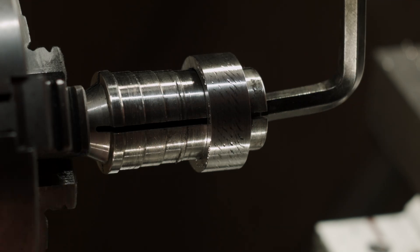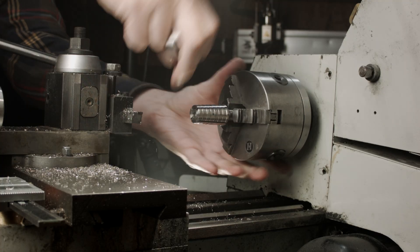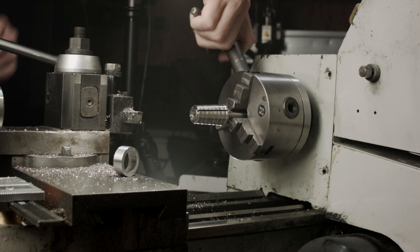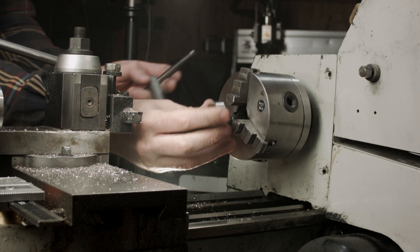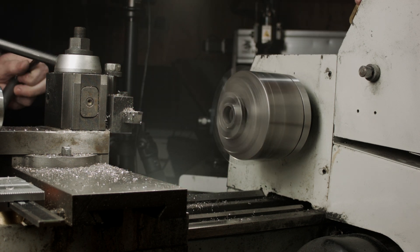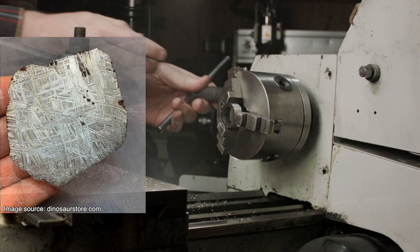The nickel to iron ratio along with the cooling time is what determines the size of these crystals. Which makes it possible for even an untrained eye to see the difference between different meteorites. The meteorites I use are the Muonionalusta, which has a pretty fine pattern, which is fantastic for making rings.